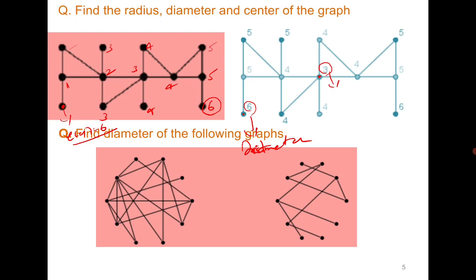One more quick question: find the diameter of the following graphs. For the first one, you can observe that the eccentricity is 3 for all the vertices, and therefore the diameter is 3 — it is easy to compute. For the second one the diameter is 7: starting from one end, 1, 2, 3, 4, 5, 6, and 7.